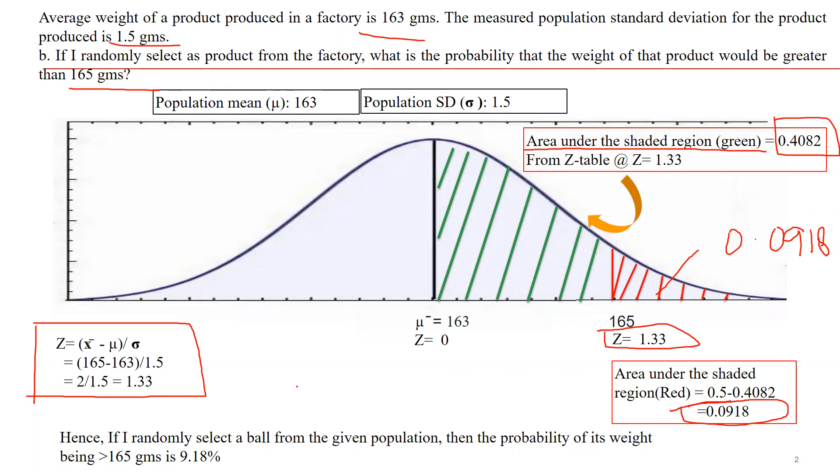If I randomly select a ball from the given population, then the probability of its weight being greater than 165 grams is 9.18 percent. We will reject null hypothesis because that area shows acceptance of the null hypothesis. The rest of the region is where we accept alternate hypothesis. The red region means null hypothesis is rejected, then alternate hypothesis is accepted.